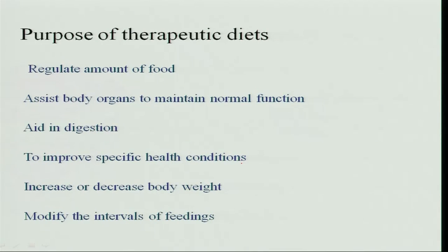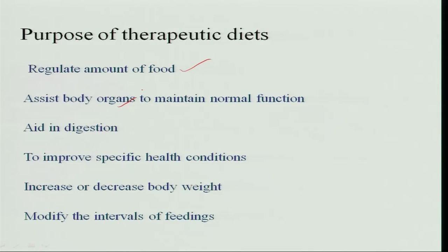The purposes of therapeutic diets include: regulating the amount of food — rather than drastically decreasing food, the pattern is changed and food is given more frequently so that total food intake does not decrease when the person is sick. It should also assist body organs to maintain normal function, with no weakness or decreased organ performance. It should aid in digestion by being soft and mild, because when a person is sick, the secretion of digestive juices also becomes sluggish.